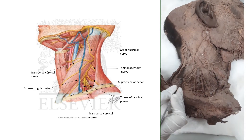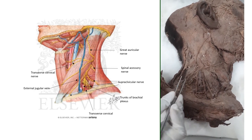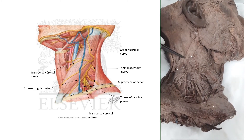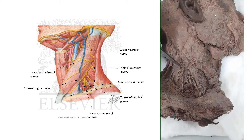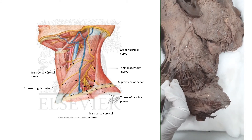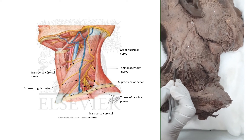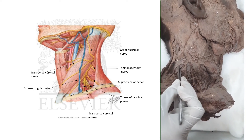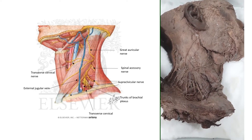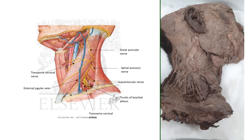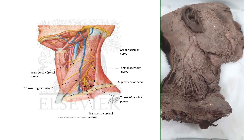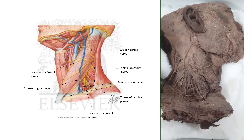The first content is the spinal accessory nerve. This nerve pierces the posterior border of the sternocleidomastoid muscle, runs over the levator scapulae muscle parallelly, and then disappears into the trapezius approximately 5 cm above the clavicle.